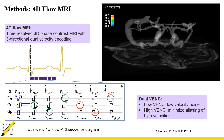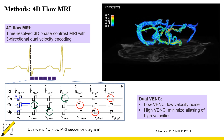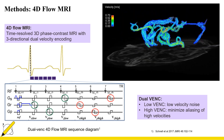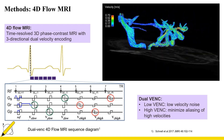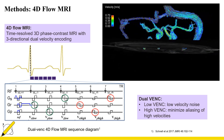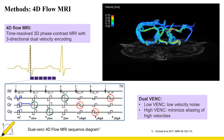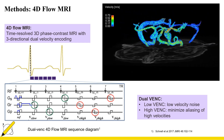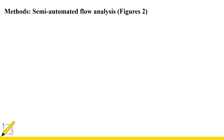Using 4D flow MRI, a three-dimensional time-dependent velocity field within the volume of interest can be visualized with streamlines colored by velocity magnitude. In addition, hemodynamic quantification can be performed. The semi-automated analysis tool evaluates flow and velocity in the entire cerebral vasculature and provides a comprehensive report of hemodynamic parameters.